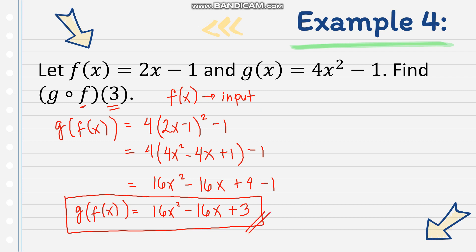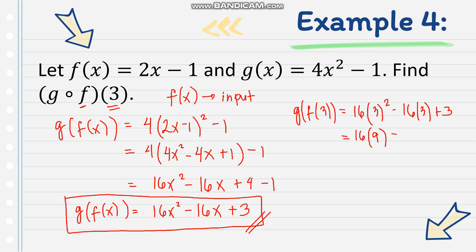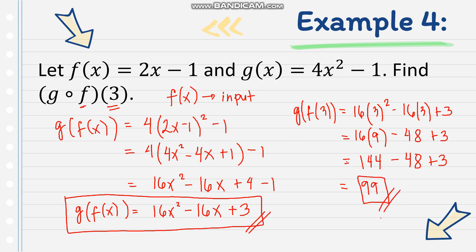Now we evaluate with x equals 3. So g of f of 3 equals 16 times 3 squared minus 16 times 3 plus 3. That is 16 times 9 minus 48 plus 3, which equals 144 minus 48 plus 3. Therefore, the final answer is 99.